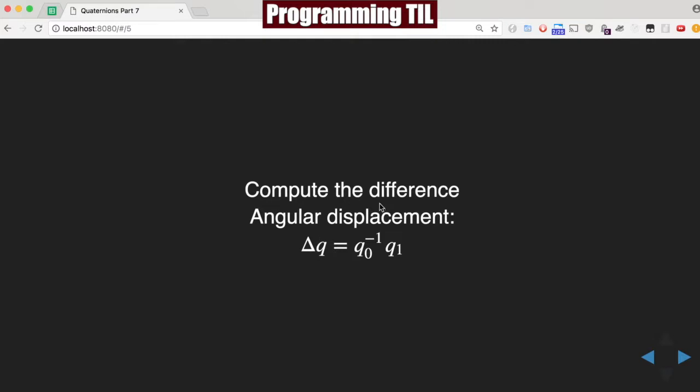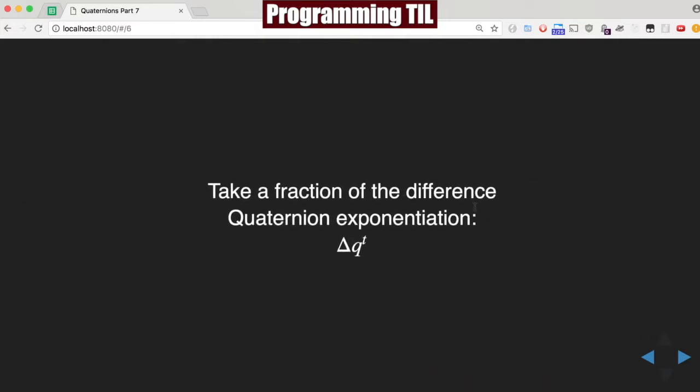So let's compute the difference first of an angular displacement. The change within the two is the inverse of the original times the second one. Next we're going to take a fraction, and we'll use quaternion exponentiation for that.